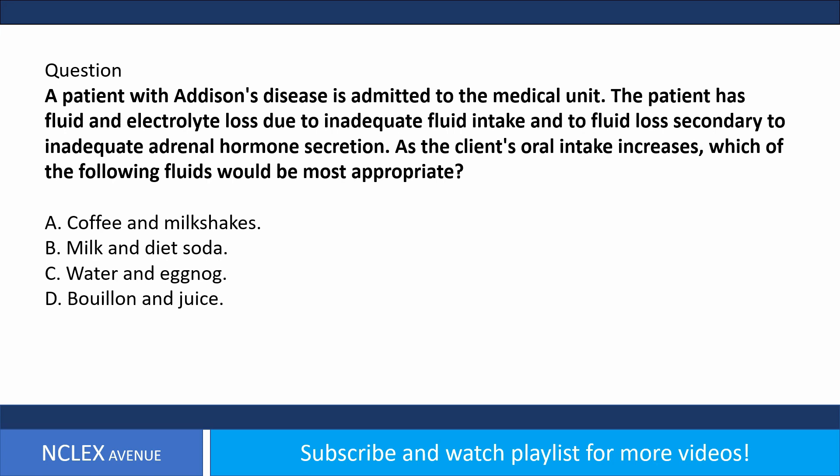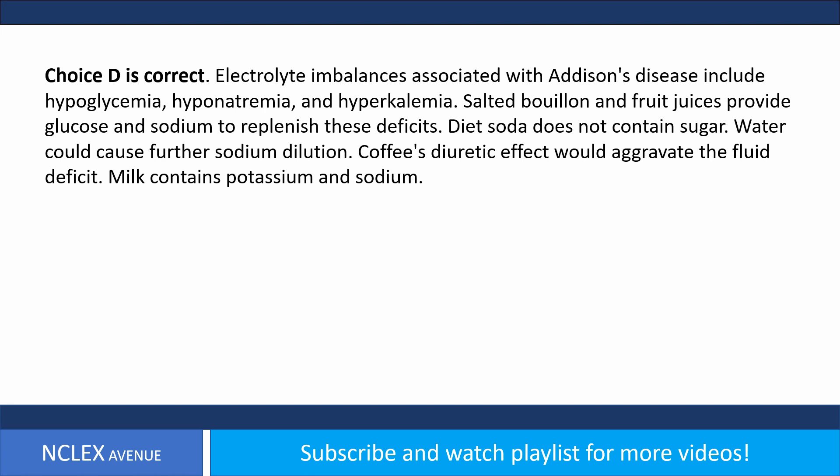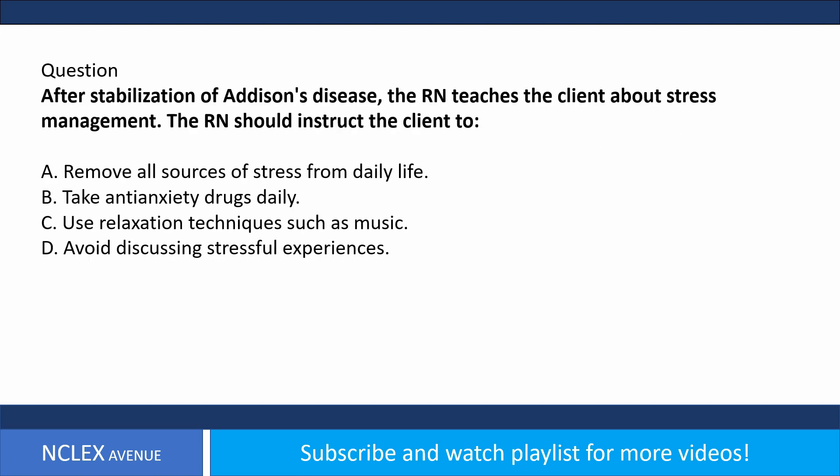Question: A patient with Addison's disease is admitted with fluid and electrolyte loss. As oral intake increases, which fluids would be most appropriate? A) Coffee and milkshakes, B) milk and diet soda, C) water and eggnog, D) bouillon and juice. Answer choice D is correct. Electrolyte imbalances with Addison's disease include hypoglycemia, hyponatremia, and hyperkalemia. Salted bouillon and fruit juices provide glucose and sodium. Diet soda lacks sugar, water could dilute sodium further, and coffee's diuretic effect aggravates fluid deficit. Milk contains potassium.